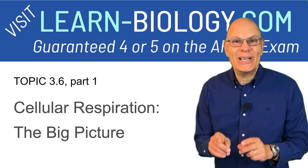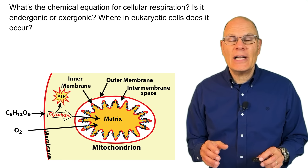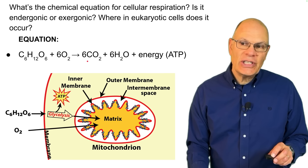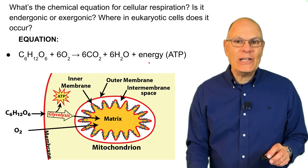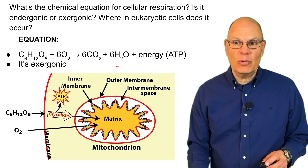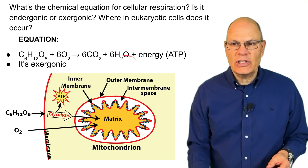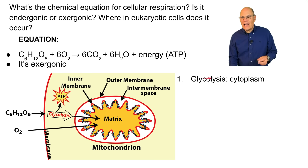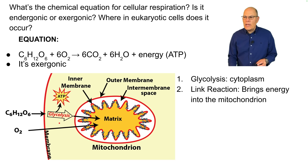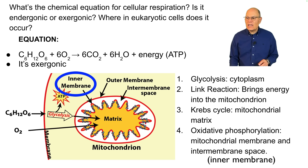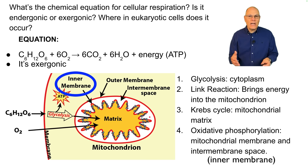Cellular respiration, the big picture. The equation is: C₆H₁₂O₆ (glucose) + 6O₂ → 6CO₂ + 6H₂O + energy in the form of ATP. It's an exergonic reaction — it releases energy and creates disorder, taking an organized molecule like glucose and creating much less organization. It occurs in various phases: glycolysis in the cytoplasm, then the link reaction brings pyruvate into the mitochondrion, the Krebs cycle occurs in the matrix, and finally oxidative phosphorylation — which produces the most ATP — occurs along the mitochondrial inner membrane using the intermembrane space to create a chemiosmotic gradient.